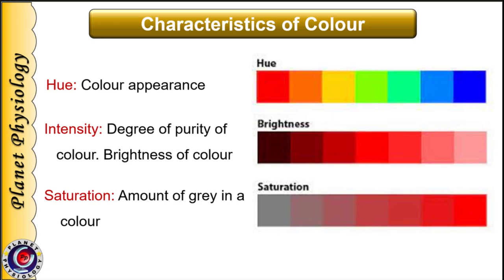Our brain first processes the hue in the color blobs and then the other parameters of color. So basically it first detects which color we are seeing and then the other parameters. Also, in various abnormalities of color vision, one or more of these characteristics are altered.